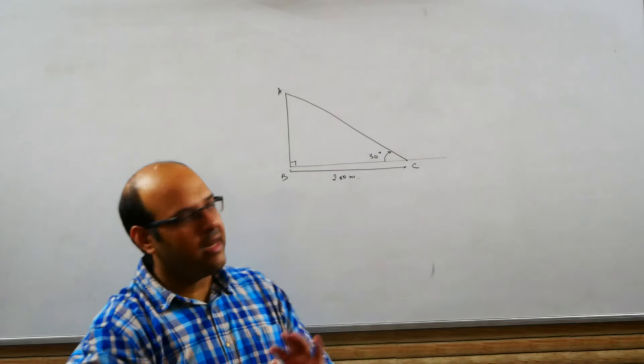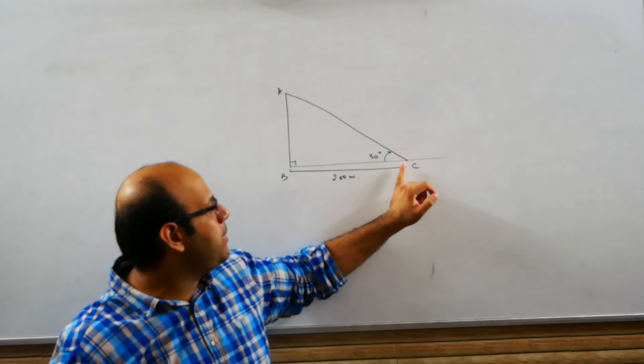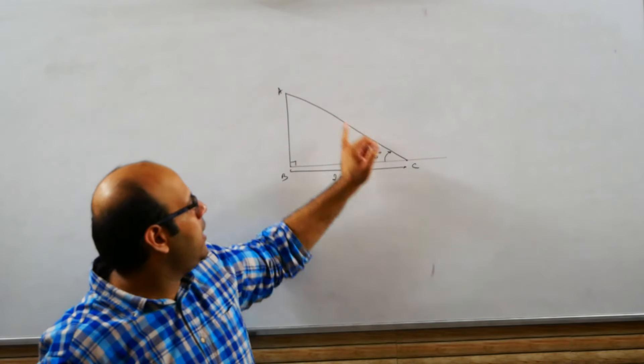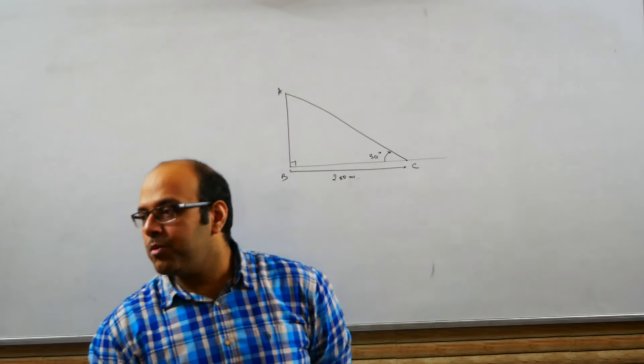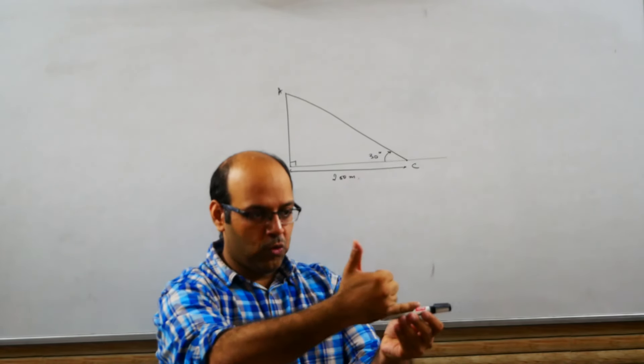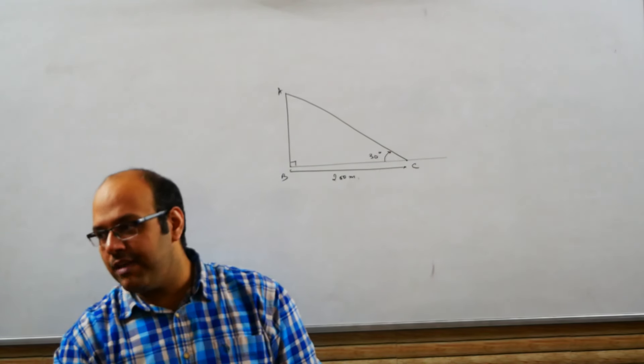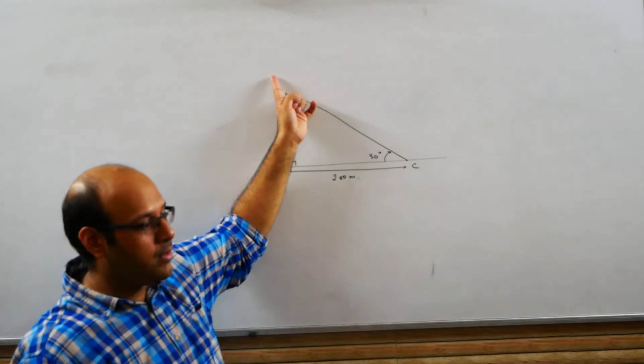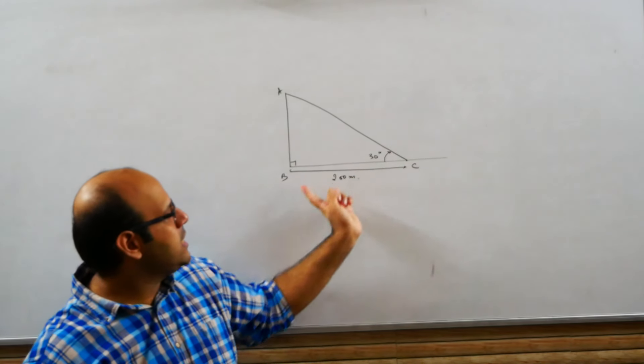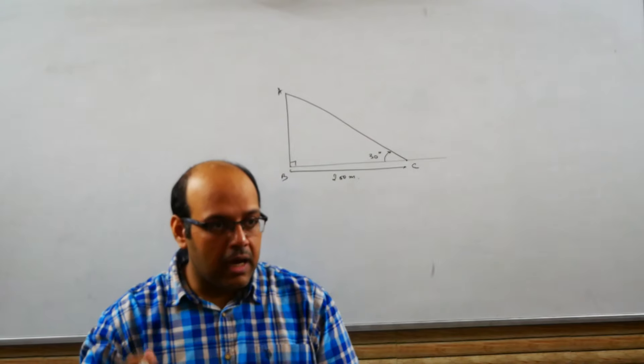Right, the building whose height we need to find, whose foot is B, from there I went 200 meters ahead as a random example, to point C. And from C I noticed that the building's topmost point, its angle is forming 30 degrees. This is called angle of elevation. Right, now you are at horizontal level, you are at horizontal level here from the top of the tower from this point C which is 200 meters from the foot is 30 degrees. Using this information I need to find the building's height.